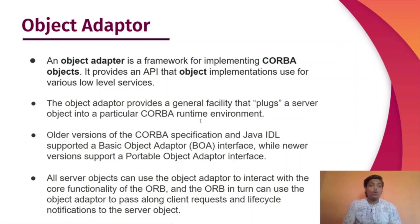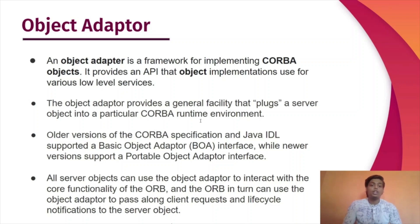The next main element of CORBA is the object adapter. An object adapter is a framework for implementing CORBA objects. It provides an API that object implementations use for various low-level services. The object adapter provides a general facility that plugs a server object into a particular CORBA runtime environment. Older versions of the CORBA specification and Java IDL support a BOA (Basic Object Adapter) interface, while newer versions support a POA (Portable Object Adapter) interface. All server objects can use the object adapter to interact with the core functionality of the ORB, and the ORB in turn uses the object adapter to pass client requests and lifecycle notifications to the server object.